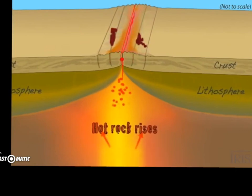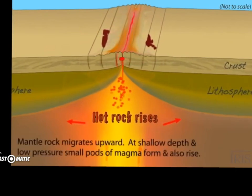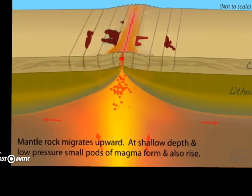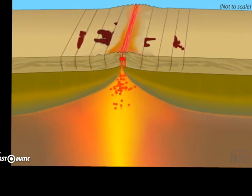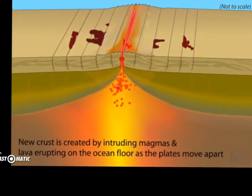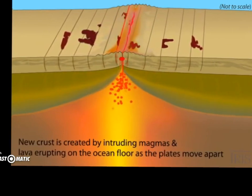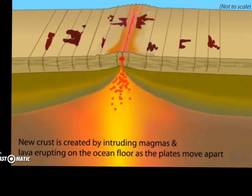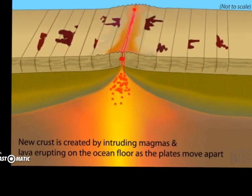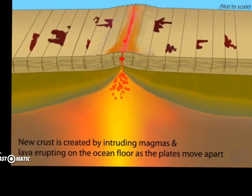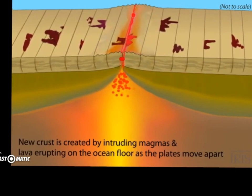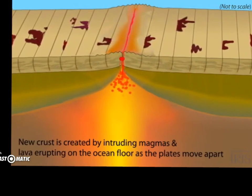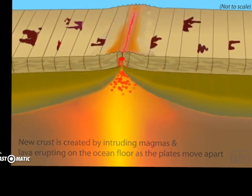This hot rock, known as magma, migrates upward. The magma forms and starts to rise, then rises through the crust, and at the top it becomes lava, creating new crust along this mid-ocean ridge. Lava erupts on the ocean floor as the plates move apart.